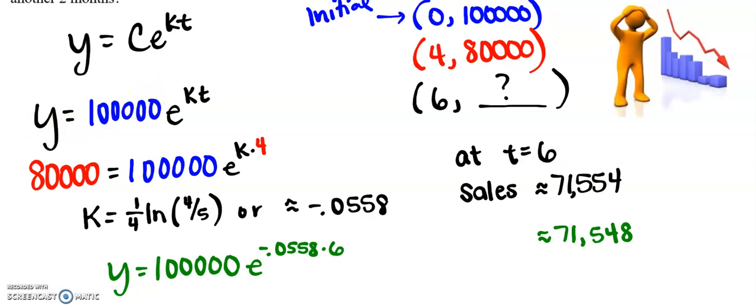All right, here's what we've got worked out. I do want to point out that if you use the exact value of k, you're going to get this number. And if you use the rounded value of k, you're going to get that number. But both of them would be acceptable. And you'd know pretty quickly from the multiple choice answers which one you're supposed to pick.